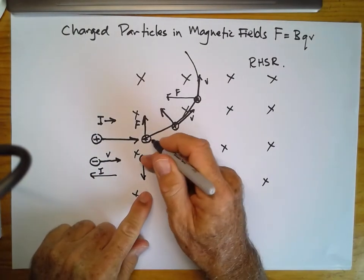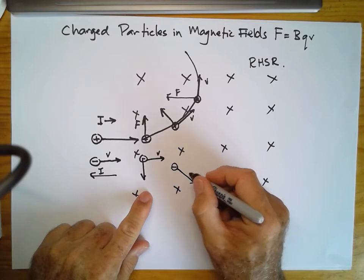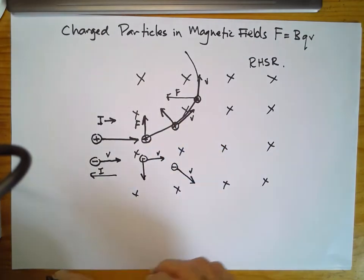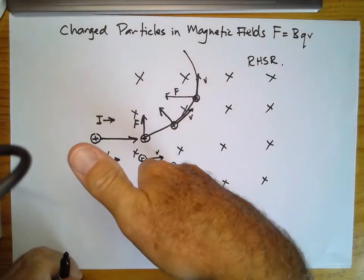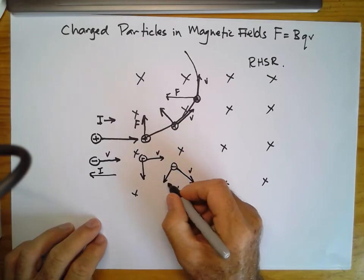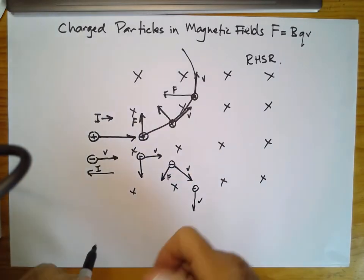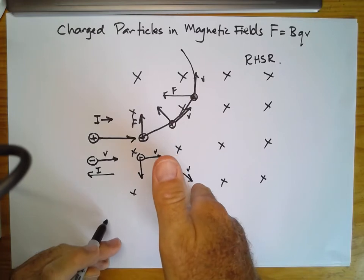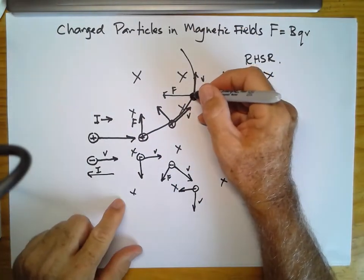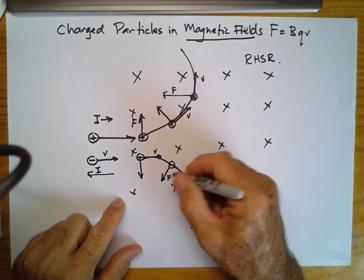That force moves the particle further down, so it will now be here, moving in this direction. A negative particle moving in this direction is equivalent to a conventional current moving in the opposite direction. With the magnetic field into the board, the right-hand slap rule gives the force in this direction. As it moves further down and travels in each new direction, the force continues to act sideways. Just as the positive particle moved in a circular path, a negative particle also moves in a circular path — but in the opposite direction.